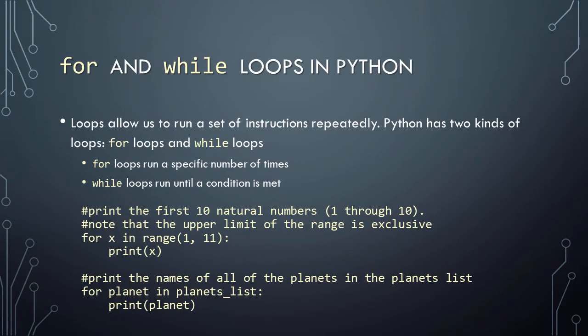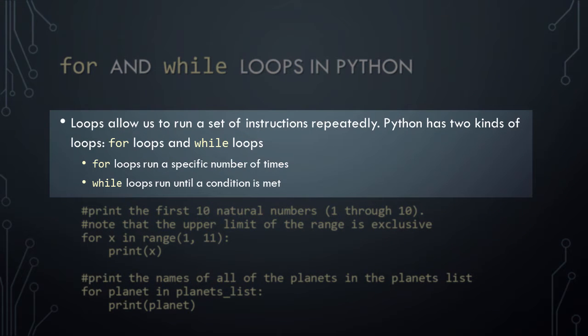We'll begin this lesson by learning about for and while loops in Python. In general, loops allow us to run the same set of instructions several times in a row. Python has two kinds of loops: for loops and while loops. The difference between the two is that for loops run a specific number of times, and while loops run until a condition is met.